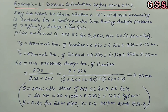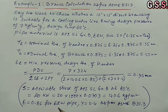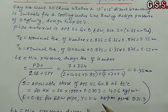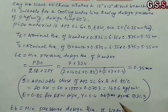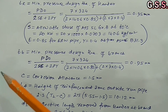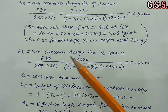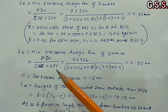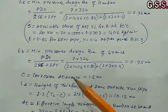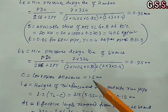E = joint efficiency = 0.85 for ERW pipe. Y = 0.4 as per ASME B31.3. Similarly, small tB = minimum pressure design thickness of branch = 0.95 mm. C = corrosion allowance = 1.5 mm.